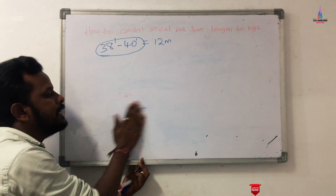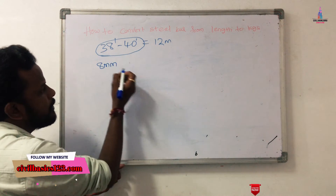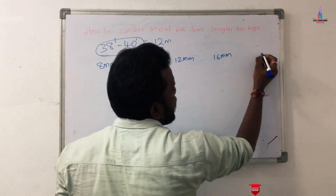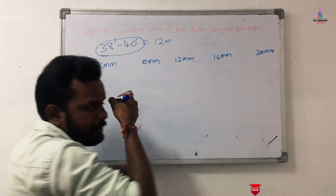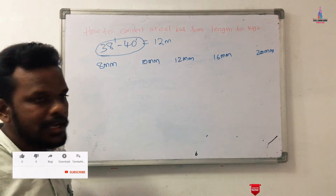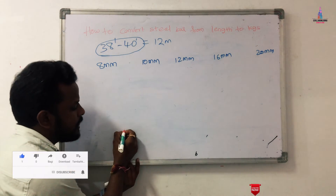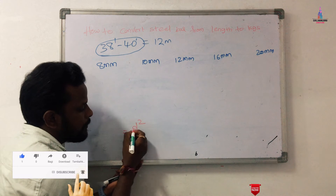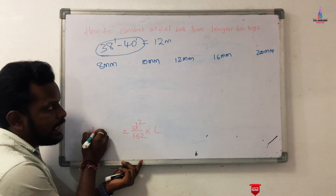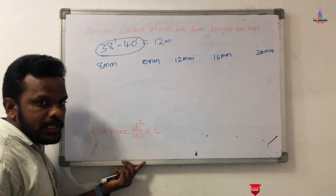I will now explain how to convert an 8 mm bar diameter from length to cages, then cover 10 mm and 12 mm diameter bars using the same process. The basic formula for converting length to cages (kg) is: d² ÷ 162 × L, where d is the diameter in mm and L is the length in meters. This formula is what we need for calculating bars from length to weight.